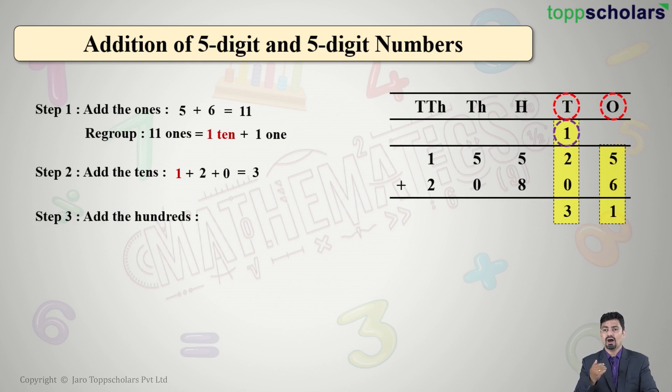In the hundreds column, we have 5 + 8. What is the answer? It is 13. So we regroup 13 hundreds as 1 thousand plus 3 hundreds.